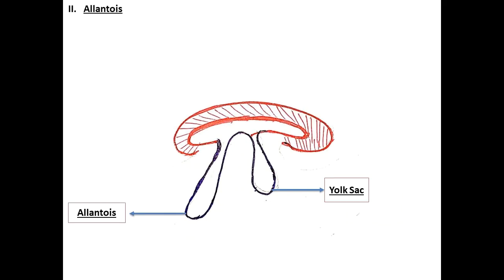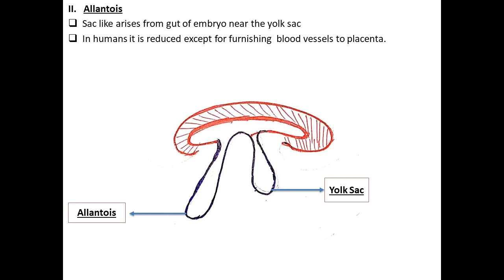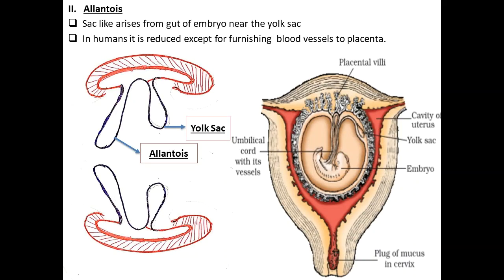The yolk sac is the second extra-embryonic layer below the embryo is the allantois. The endoderm formed the gut first - the elementary canal. The allantois is a sac-like structure from the gut of the embryo near the yolk sac. It is also a reduced structure, and both the yolk sac and allantois together form the umbilical cord.